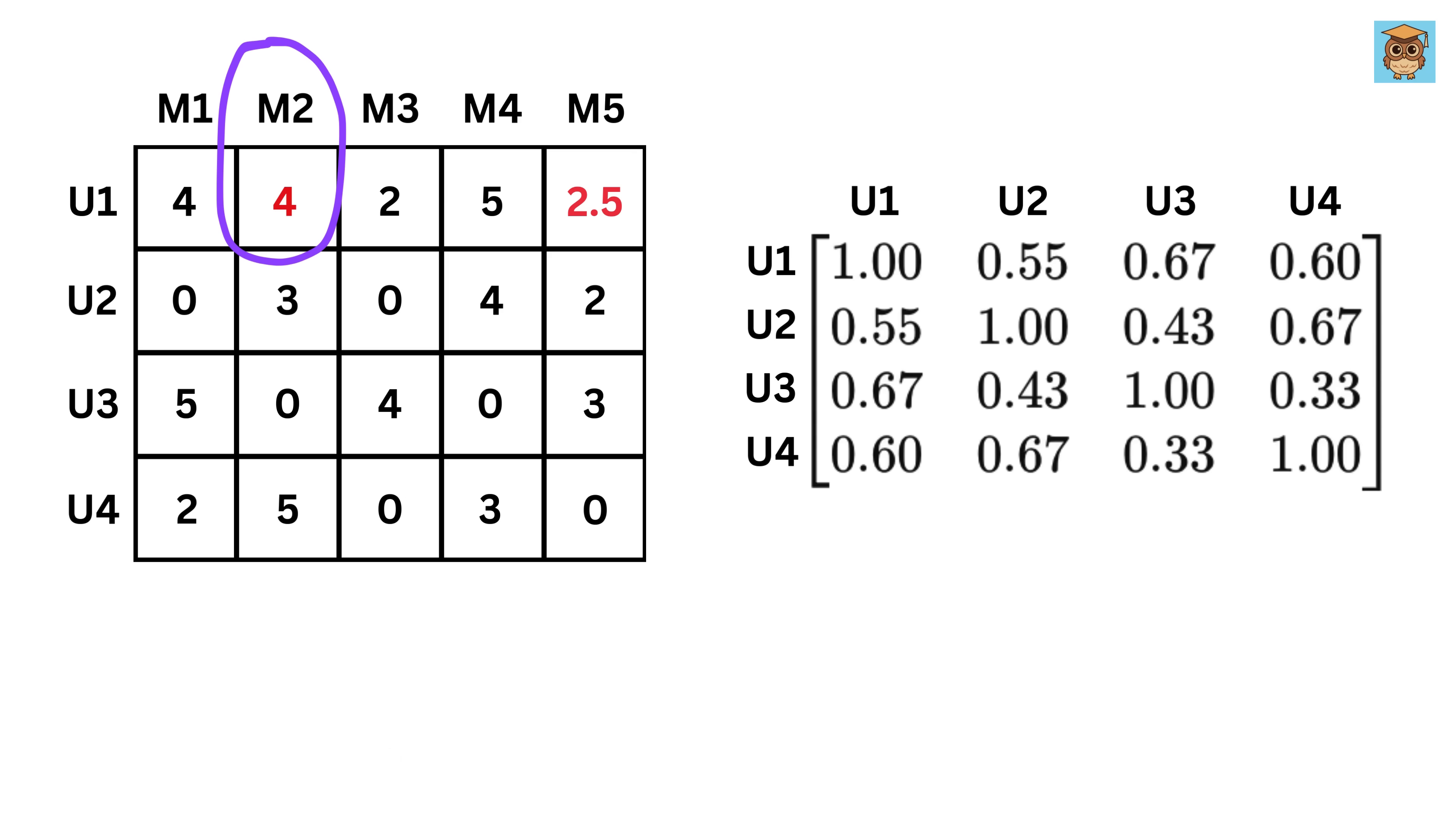Now user one's rating predictions are movie two around 4, movie five around 2.5. Netflix would say, watch movie two, it's a better bet. This is a simple method of how Netflix uses matrices. They start with your ratings, compare you to others, and predict what you'll like, all with numbers in a matrix.